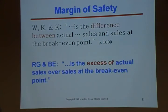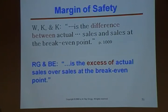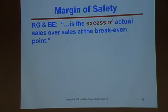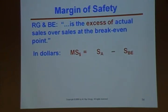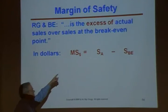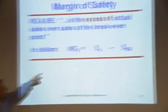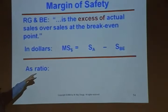The margin of safety in dollars is actual sales minus sales at break-even. It's not chemistry, nor rocket science. The excess of actual sales over sales at break-even is the margin of safety in dollars. And if we want to know that as a percentage, we take that same amount as the numerator and divide by actual sales. You'll wonder whether to divide by actual sales or sales at break-even — the answer is actual sales.